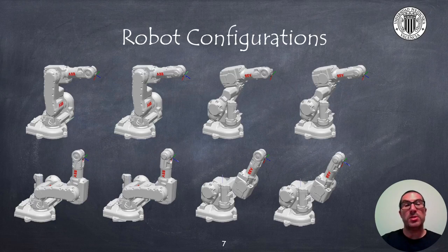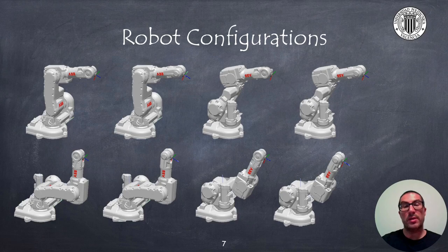Robots can adopt multiple configurations to achieve a given position or an orientation. Specifically, robots with six degrees of freedom could reach up to eight possible configurations for the same position and orientation as shown. Configurations in the first row are elbow-up configurations, while configurations in the bottom row are elbow-down configurations. Specifically, for this robot, joints one, four, and six can adopt two possible configurations each, resulting in a total of eight possible combinations for those three joints.